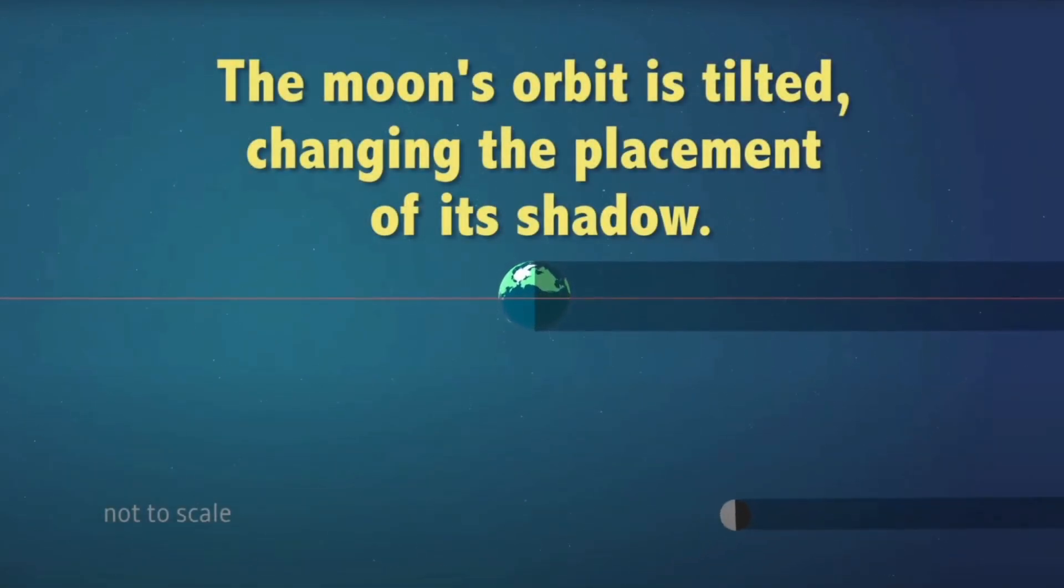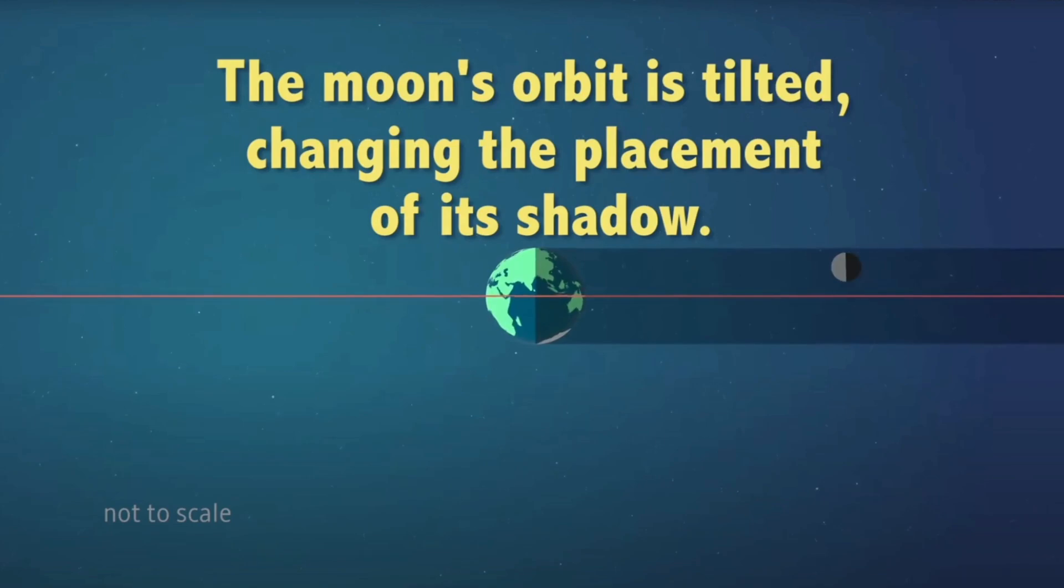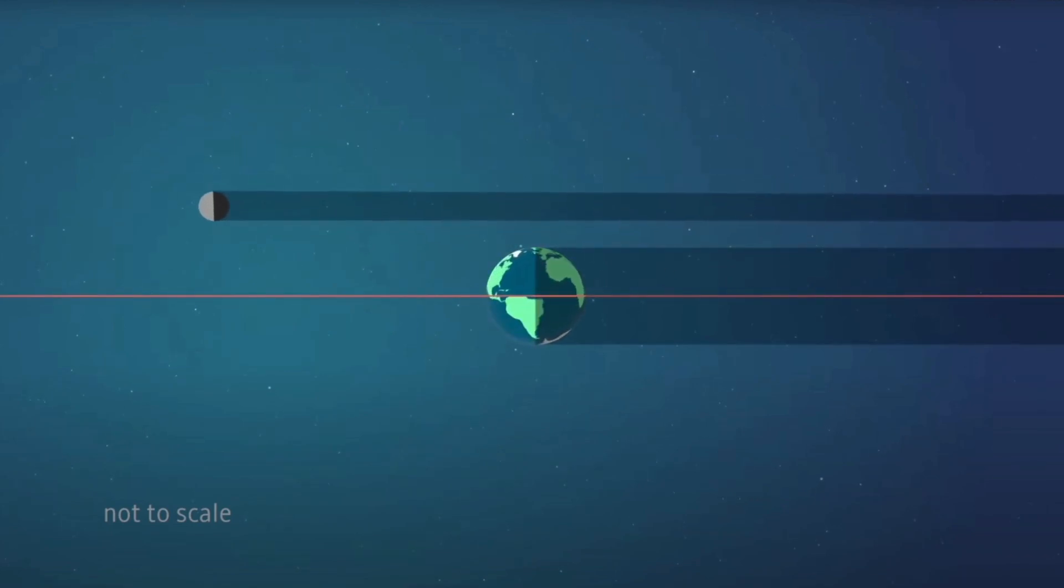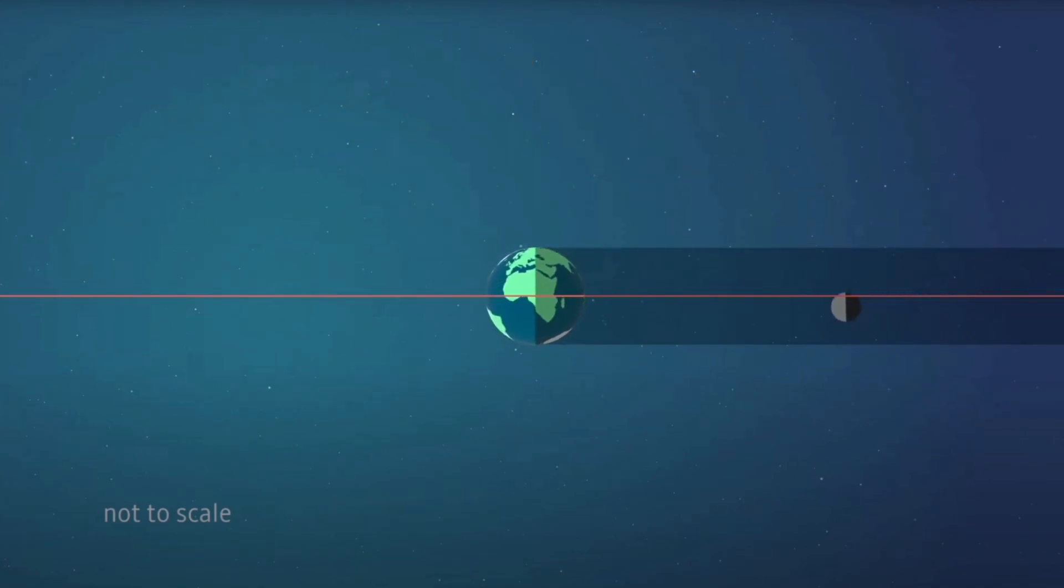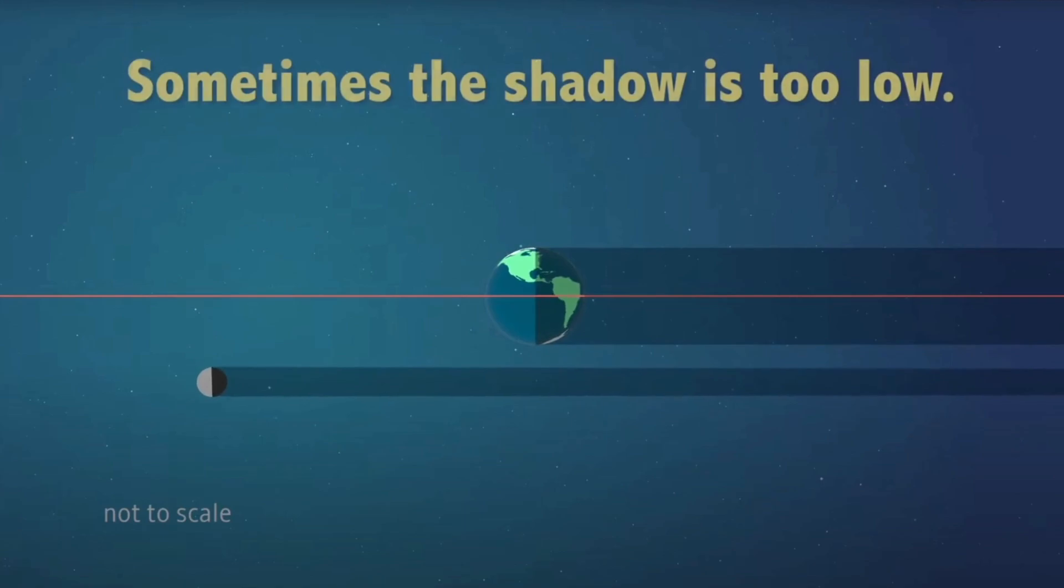That's because the Moon's orbit is tilted by about 5 degrees relative to the Earth's path around the Sun. Most of the time, the Moon passes just above or just below the Earth's shadow. Only when the full moon occurs at those crossing points, the nodes, do we get an eclipse.